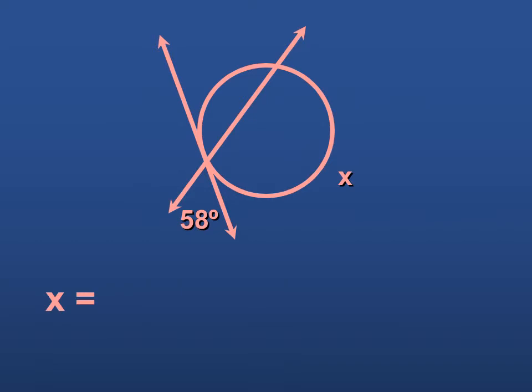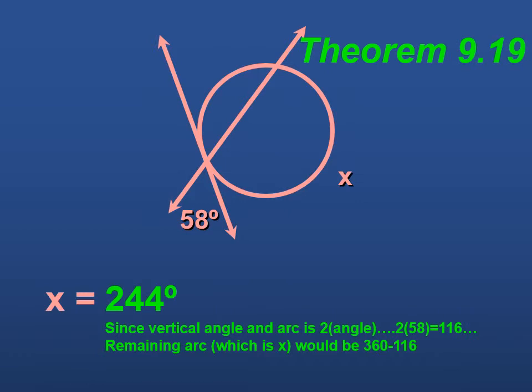This arc is twice what this angle here is. And this angle will be 58 since this is vertical angles. And X is going to be 360 minus this arc. So first we figure out 2 times 58 to get this arc, and we end up with 116. And then X would be 360 minus 116, giving us 244.